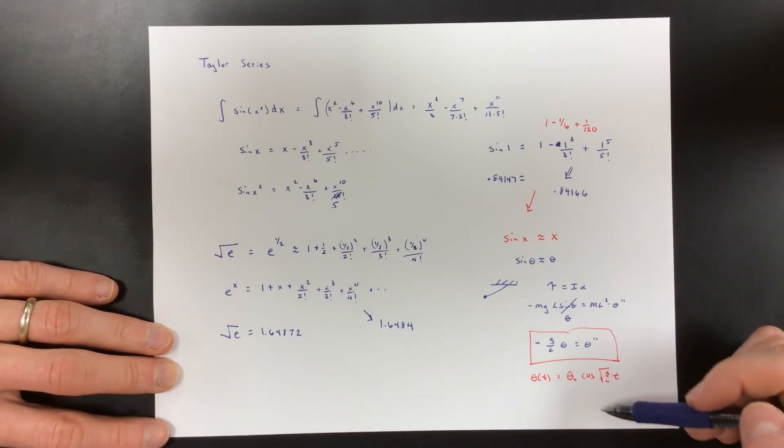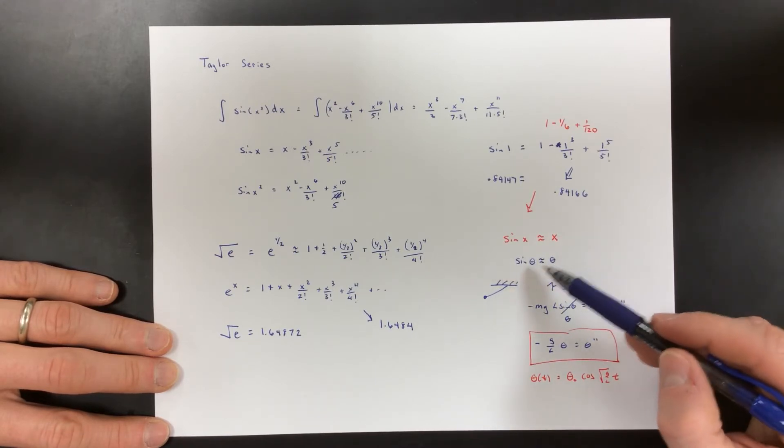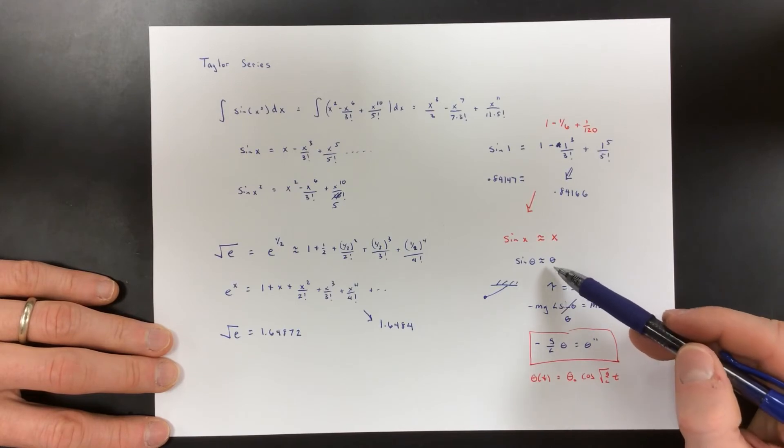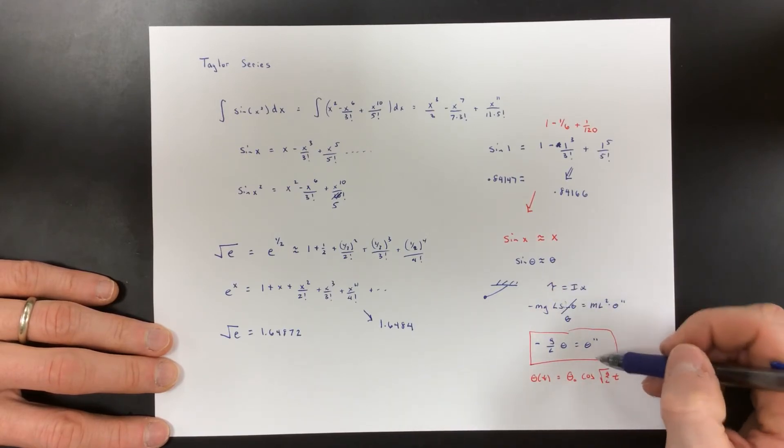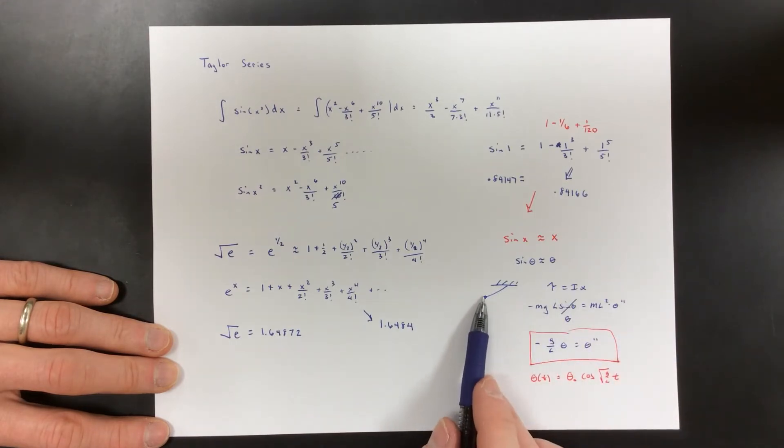The solution to that particular differential equation is cosine of the square root of g over l times t. Now we don't have to worry about that solution, I just wanted to show you an application - meaning this differential equation we can't solve analytically. If I replace sine theta by its Taylor polynomial, happens to be the first order, this differential equation I can solve and I know the function, which means I can tell you exactly what angle the pendulum is making at any given time.